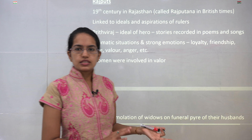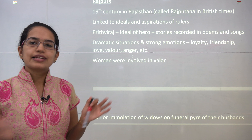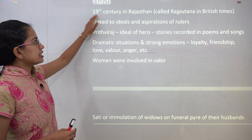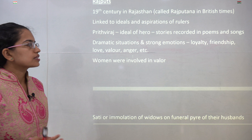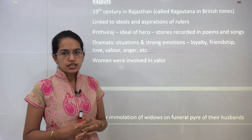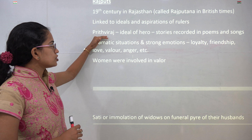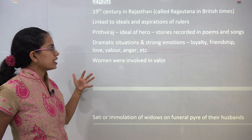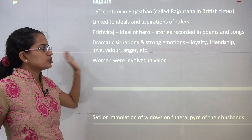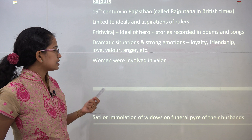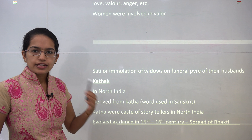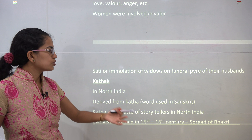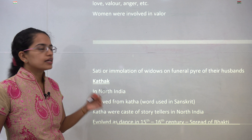Similar to what we have seen in South India, in Kerala and Odisha, you had Rajasthan that was developing. In Rajasthan, you had the Rajput cult. During the 19th century it was the state of Rajputana during British times. The ideas and aspirations were linked to the rulers of that time. Prithviraj Chauhan was one of the major leaders — there are many poems and songs dedicated to him for his valor and heroism. Women were also involved in acts of valor, and sati was a common practice where the woman would jump into the funeral pyre of her husband.